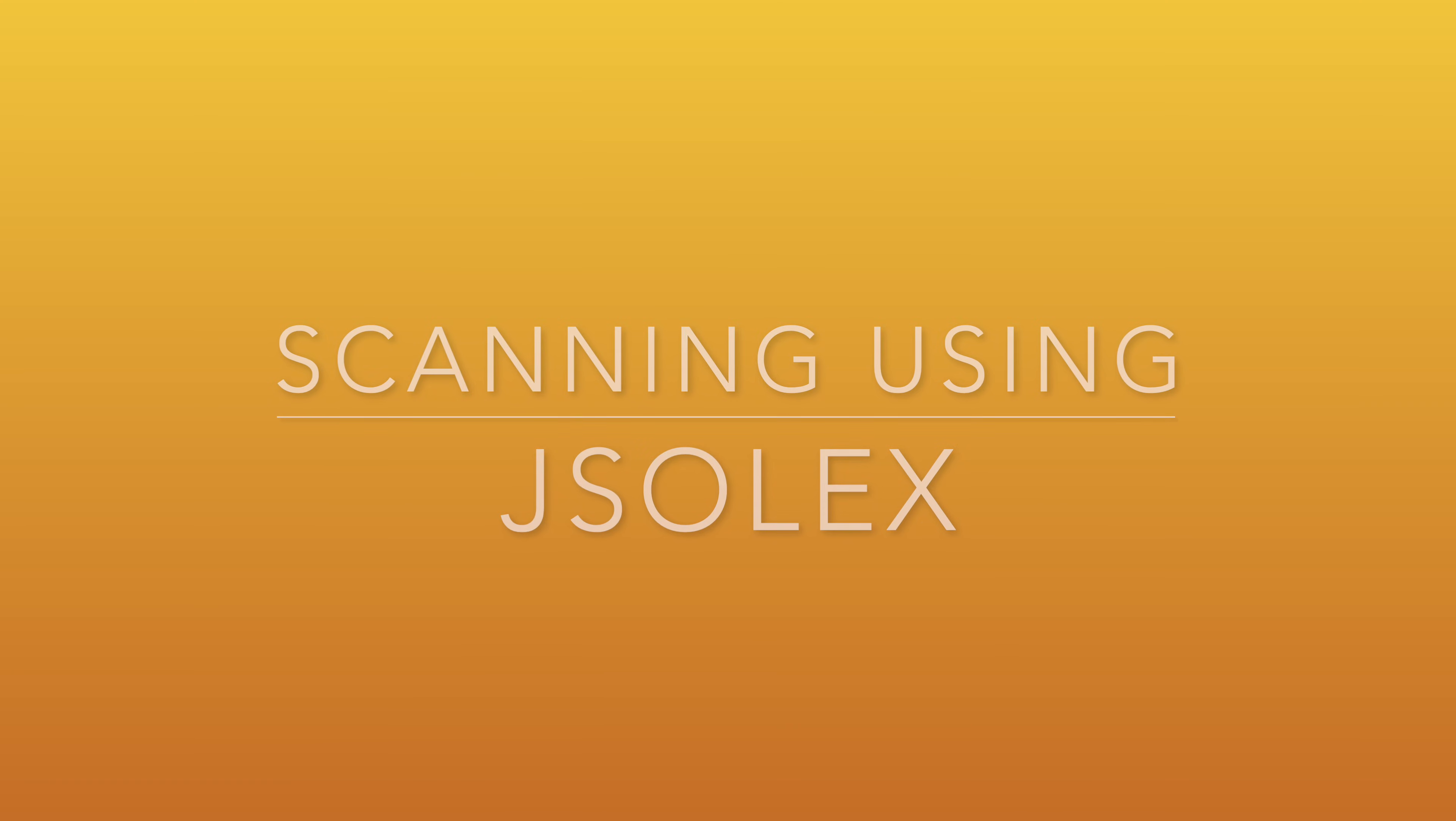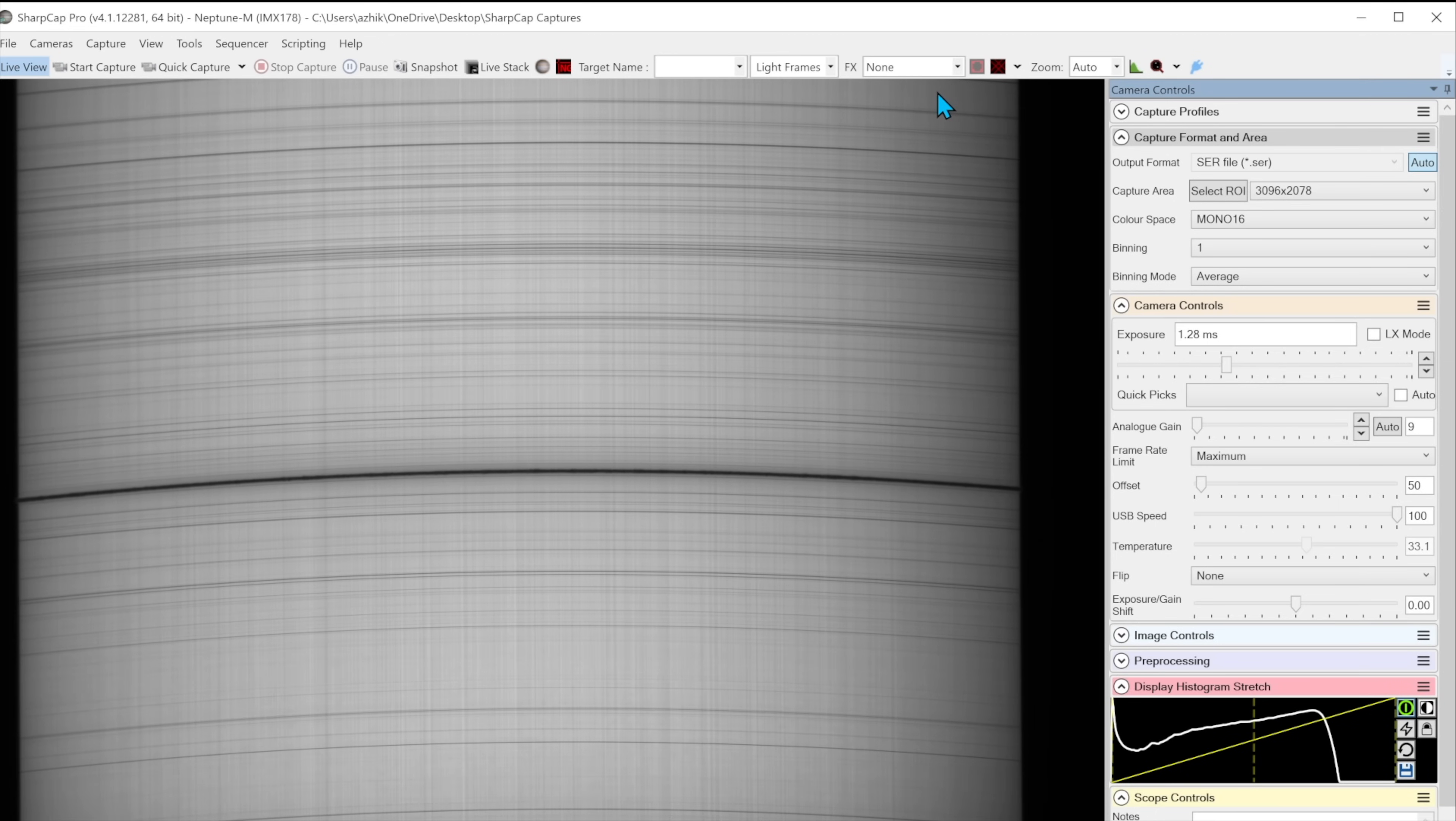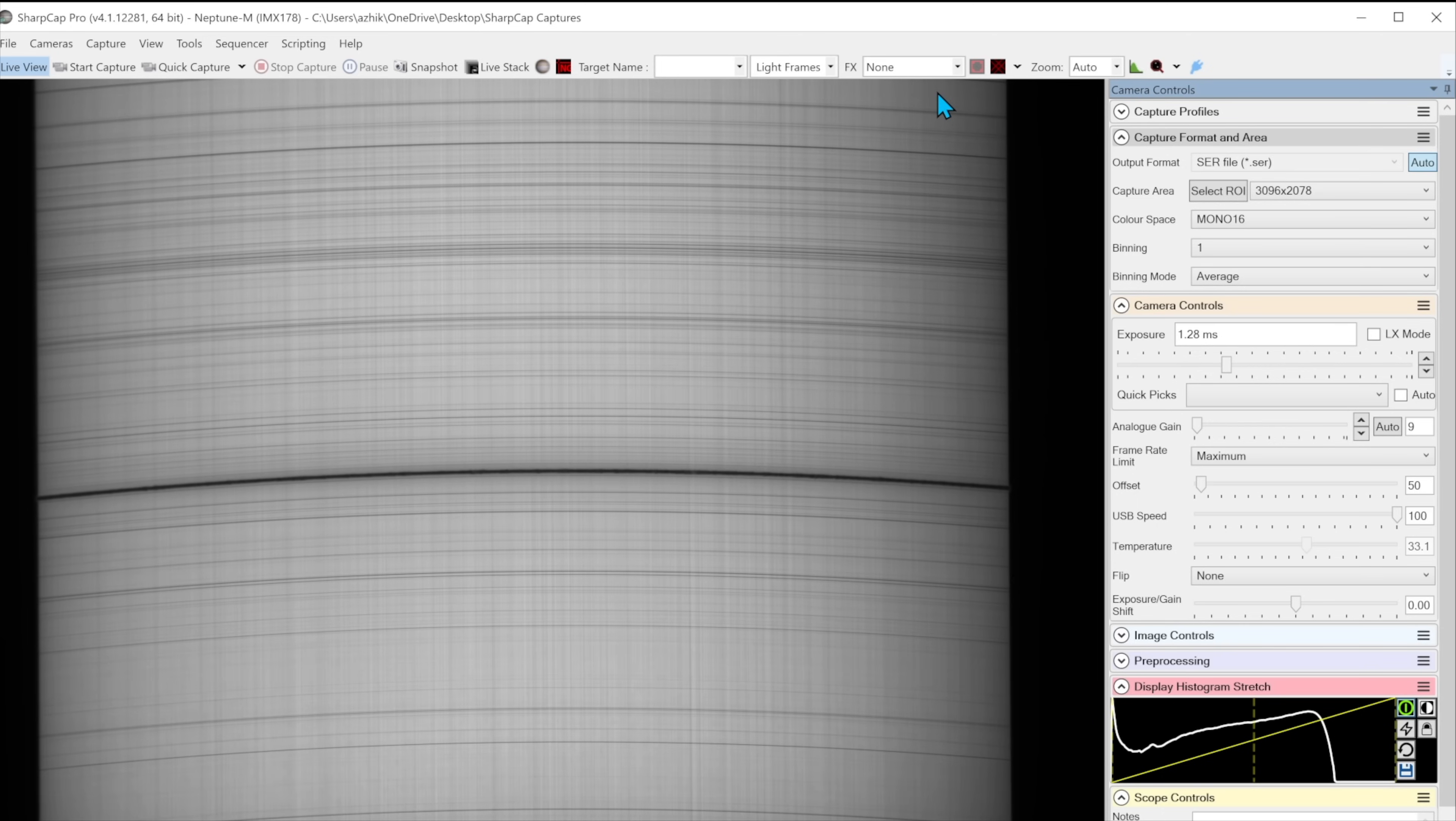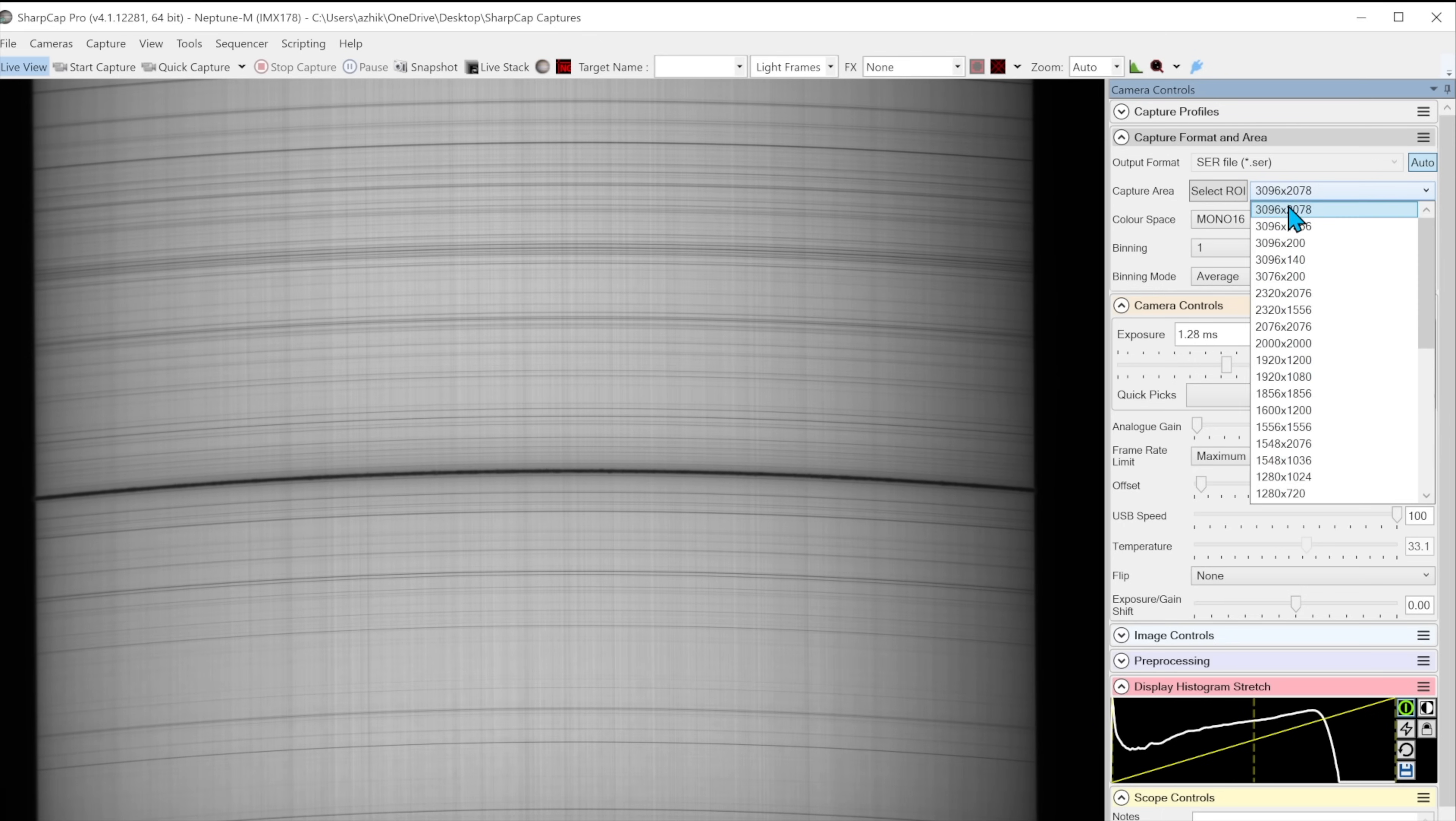Next we have to do scanning. Ensure the sun is centered on the screen. You should be able to move the scope slightly in right ascension and see the whole slice go left or right without being truncated on either edge. You now want to reduce the capture area to grab just the HA line. This will significantly speed up your frame rate which is important to get a good image.